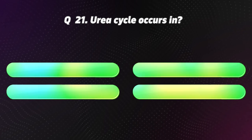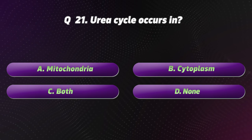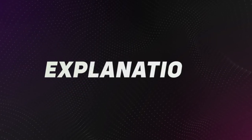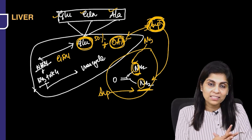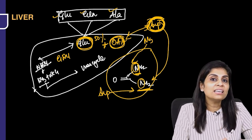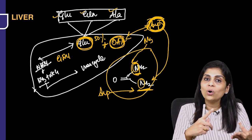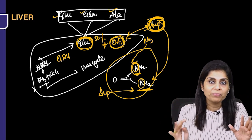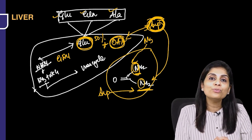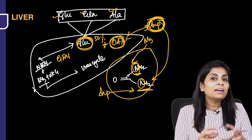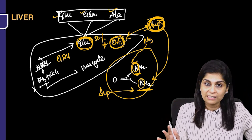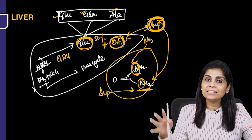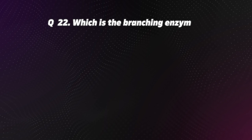Question 21. Urea cycle occurs in: A. Mitochondria, B. Cytoplasm, C. Both, D. None. The correct option is C, Both. The urea cycle occurs in the liver. The first two steps happen in mitochondria, and the remaining steps happen in the cytoplasm.